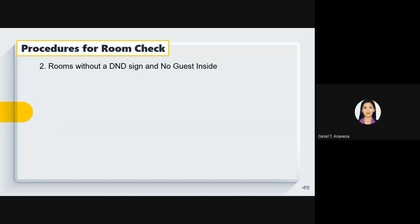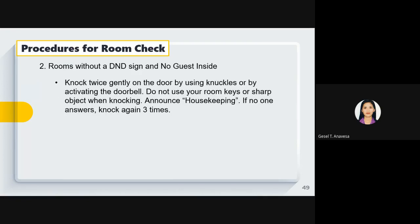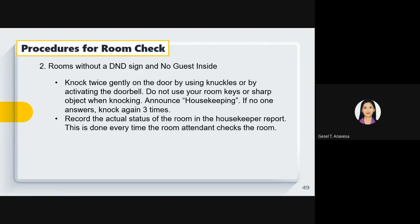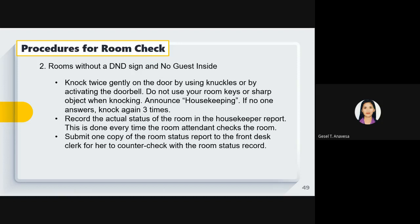For rooms without a DND sign and no guest inside: knock twice gently on the door using your knuckles or by activating the doorbell. Do not use your room keys or sharp objects when knocking. Announce yourself by saying 'housekeeping.' If no one answers, knock again — up to three times maximum. Record the actual status of the room in the housekeeper's report every time the room attendant checks the room, and submit a copy to the front desk clerk to cross-check with the room status record.